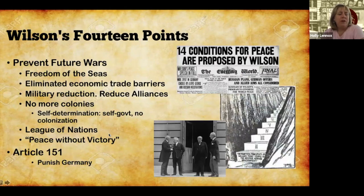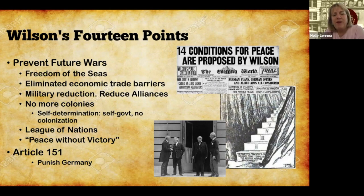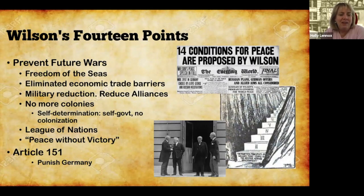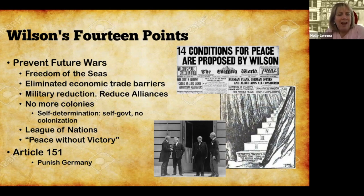At the end of the war — and we won — Wilson is going to take part in the treaty negotiations over in Versailles, France. His goal is to create a plan that would prevent all future wars: his 14-point plan. The big points were freedom of the seas, eliminating economic trade barriers throughout the world, having all countries reduce their militaries and the alliances they had built — because alliances were one of the key contributors to the start of World War I. The big thing he really wanted to push was the League of Nations, a league that would oversee all countries of the world to help maintain the peace. His idea was peace without victory — follow his 14 points and we all come out winners.